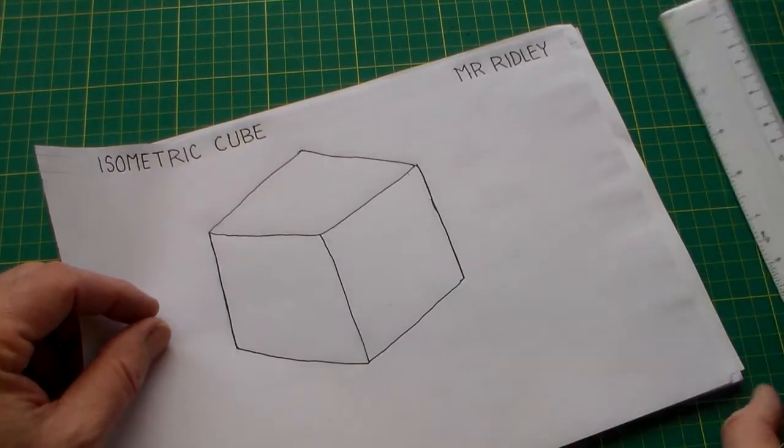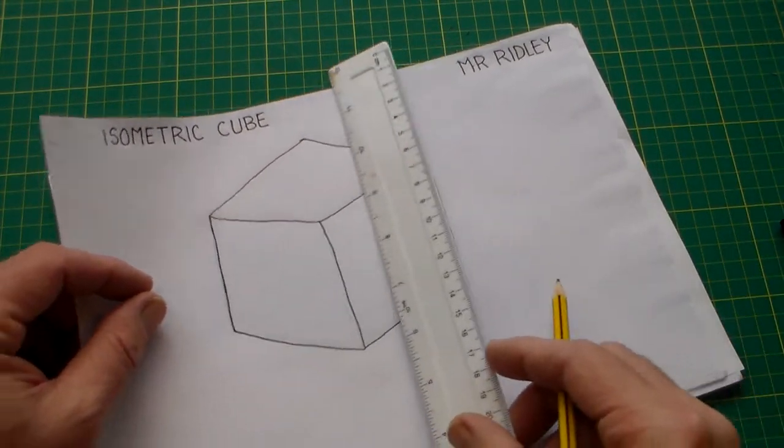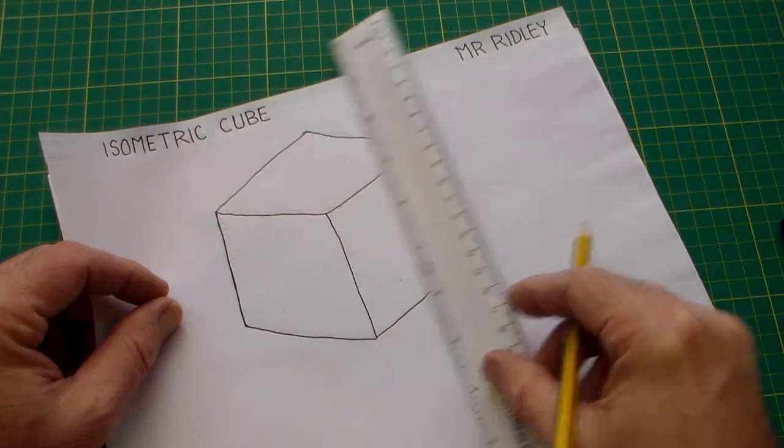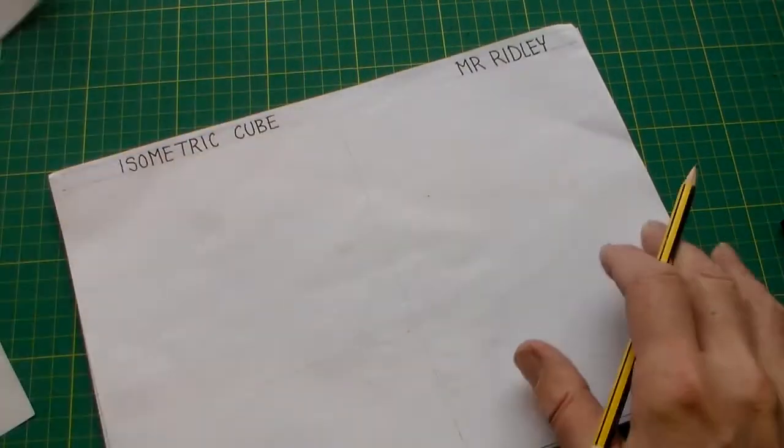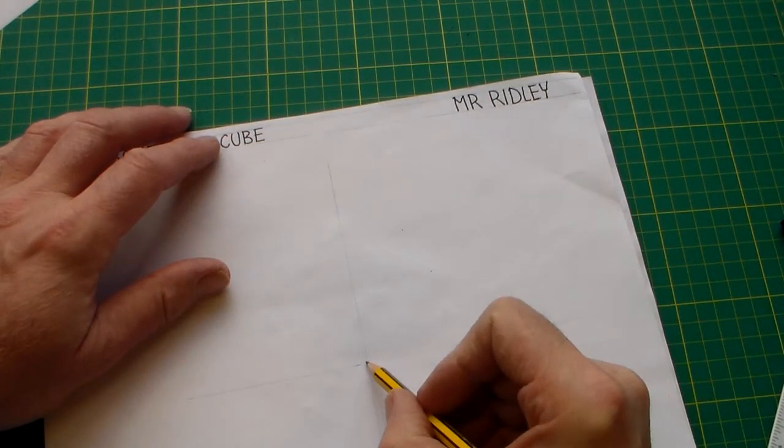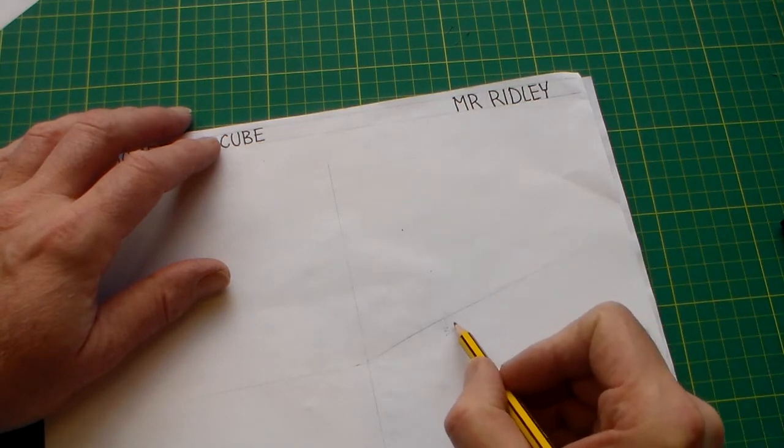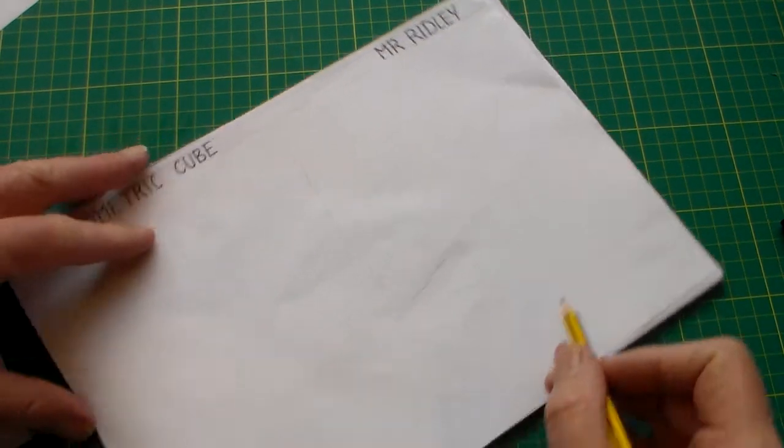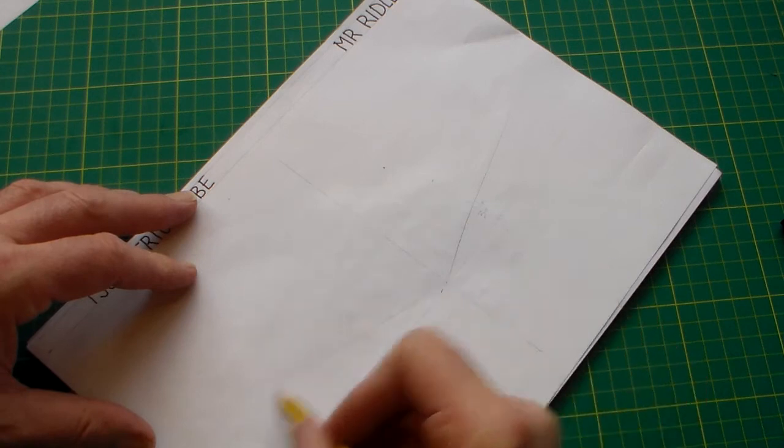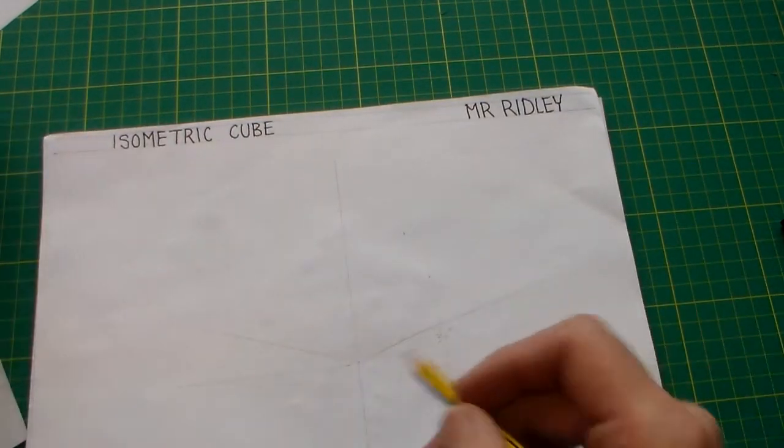Now if we look at our isometric cube, we can see that all the lines are either vertical there, or they are at 30 degrees.